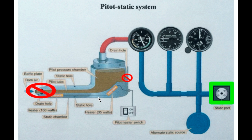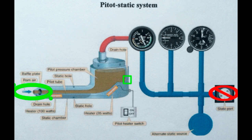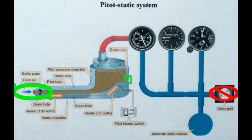Now let's cover one more issue: blockage of the static ports while the pitot tube remains open. In this case, the static port is blocked but the entire pitot tube — including ram air and ambient air through the drain hole — is still unaffected. All three instruments would be affected. Since there is no more pressure change coming through the static port, the diaphragm of the airspeed indicator would react differently — you could say it overreacts during a descent, expanding more than it normally would.